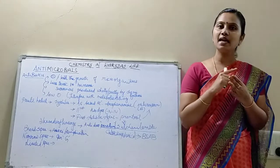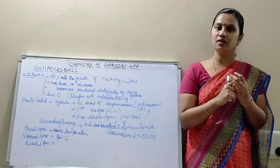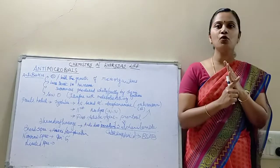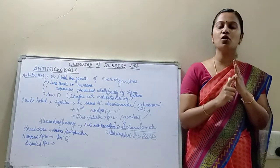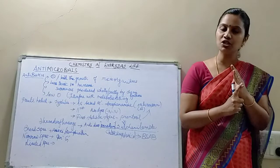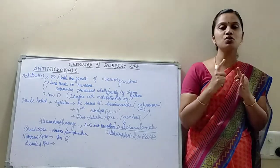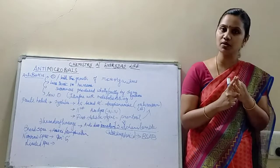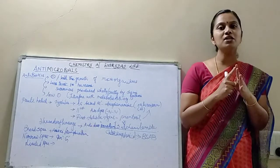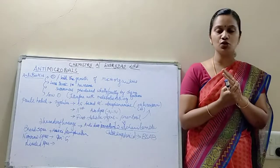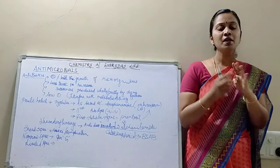What is the classification of drugs? Drugs are classified into four types: based on pharmacological action, based on drug action, based on molecular structure, and based on molecular target. These are the four classifications of drugs.